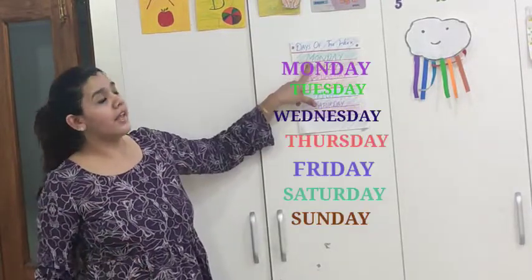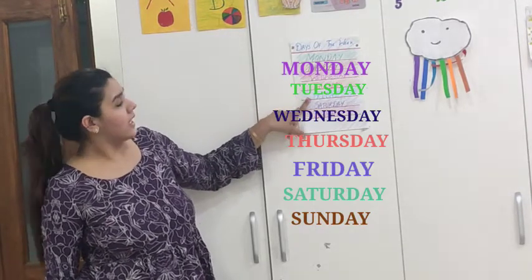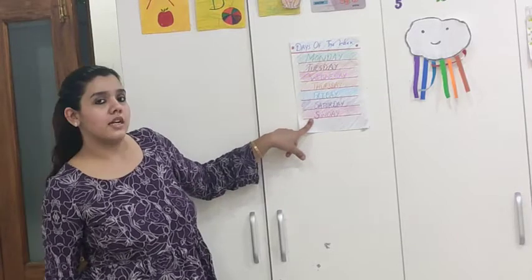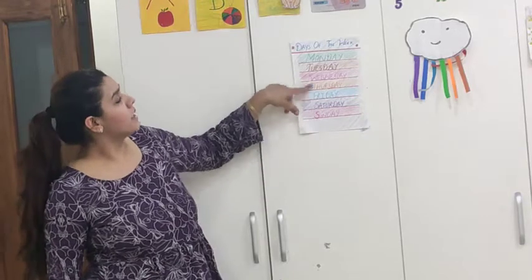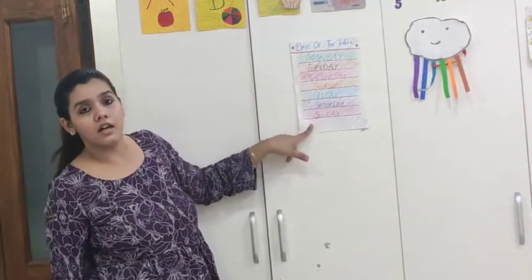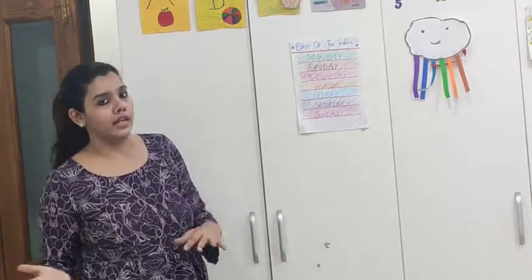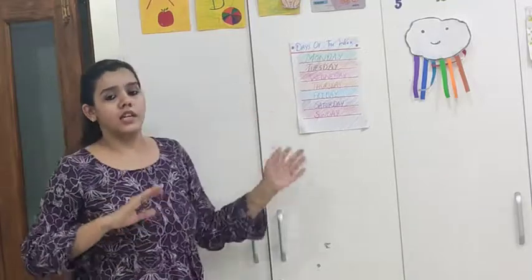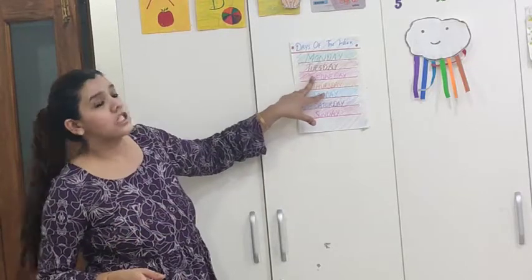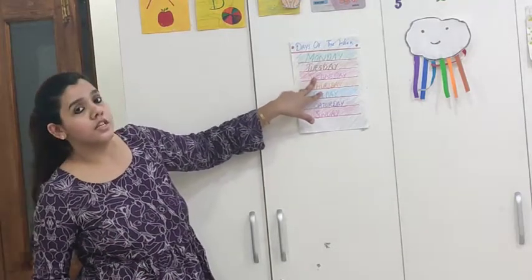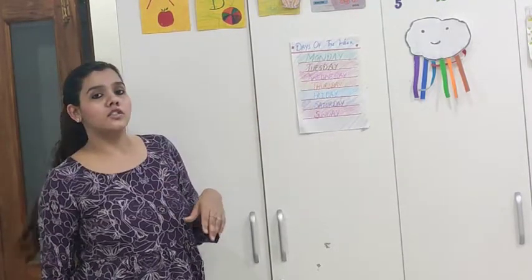It starts from Monday, Tuesday, Wednesday, Thursday, Friday, Saturday, Sunday. Sunday is a holiday, and after Sunday comes Monday again. It is like a cycle, a rotation which goes on and on and ends after seven days. So after seven days, a new week starts from Monday. Like today is Wednesday, so yesterday was Tuesday and tomorrow would be Thursday.